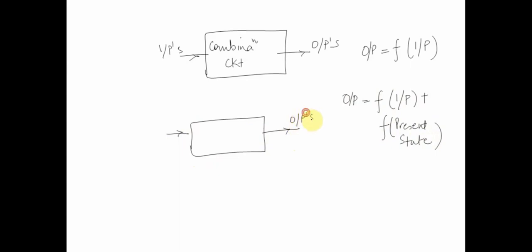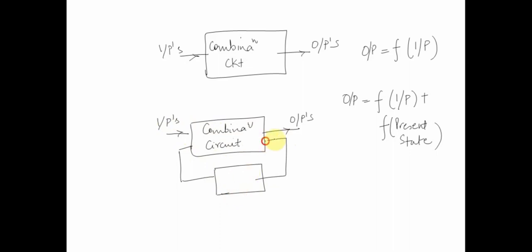We have an input, a set of outputs, and a combinational circuit. We also have a concept of memory — a sort of feedback loop in the circuit. In contrast to a combinational circuit, the output of a sequential circuit depends not only on the inputs, but also on the state, which is the current contents of this memory. The same set of inputs can yield different outputs depending upon the present state of the system.